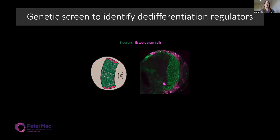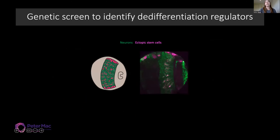To study de-differentiation, we look in the deep layers — or neuronal layers — and then stain for stem cell markers. In a normal wild-type medulla there are no stem cells within the neuron layer. However, upon de-differentiation, we see ectopic stem cells within the neuronal layer, suggesting that de-differentiation is occurring.